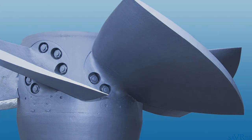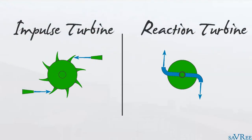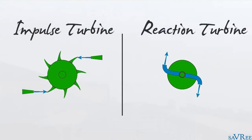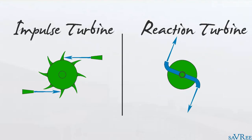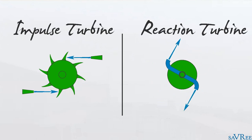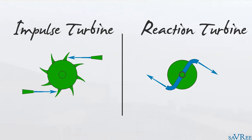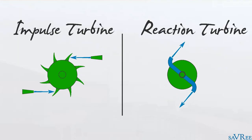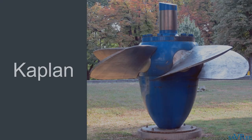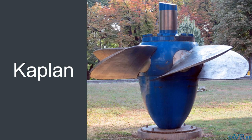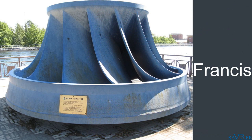We'll look at hydroelectric turbines in great detail. This includes reaction and impulse type turbines, axial, mixed, and radial type turbines, and the three most common types of turbine used in the hydroelectric industry: the Kaplan, Francis, and Pelton turbines.